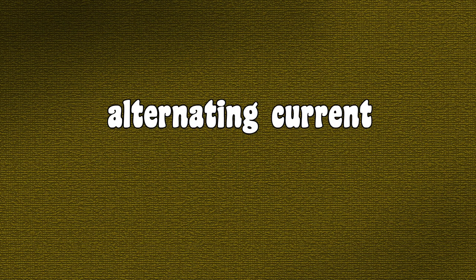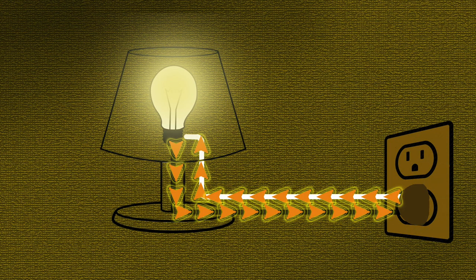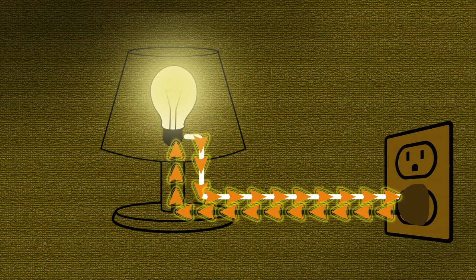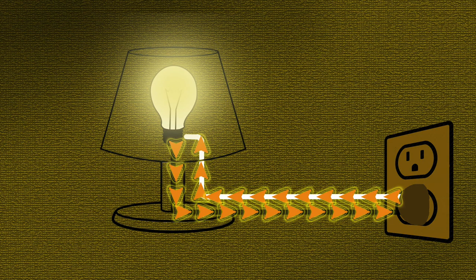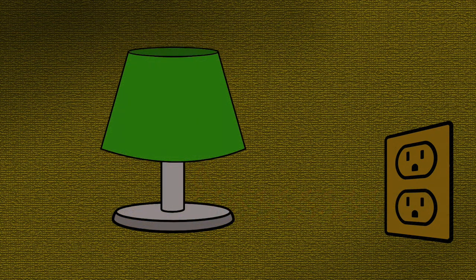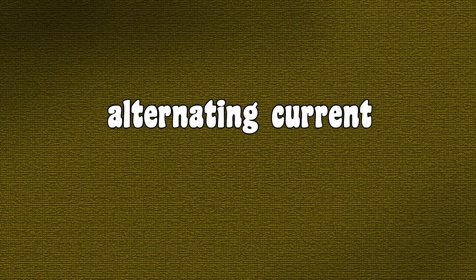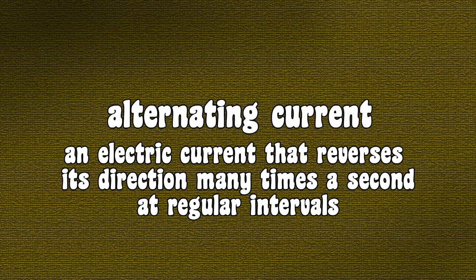Alternating current consistently changes direction — it alternates back and forth. In the US, alternating current reverses directions 60 times each second. We say it's 60 cycle, or 60 hertz. So direct current is an electrical current flowing in one direction only, and alternating current is an electrical current that reverses its direction many times a second, at regular intervals.